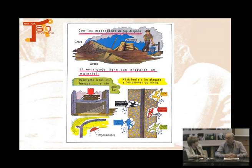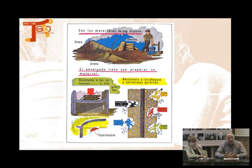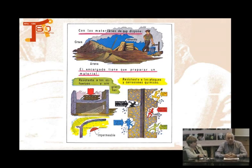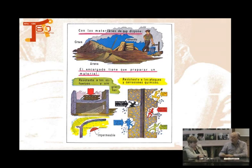Al ser un producto artificial, tiene que soportar una serie de cargas y pesos: lavadoras, mesas, personas. Tiene que aguantar, tiene que ser impermeable a la lluvia, hacemos una casa para que nos proteja del frío. Y también hay una serie de medios o ambientes agresivos, como el agua de mar, las sales que se echan por la carretera para el hielo, todos esos sulfatos y cloruros atacan a la matriz cementante.